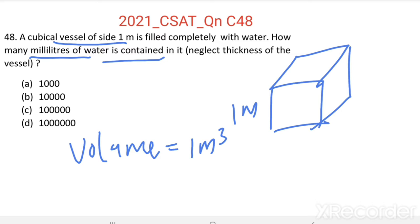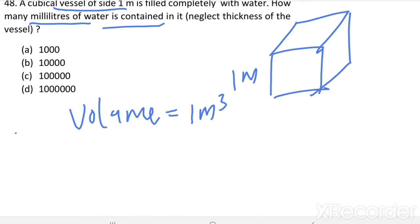We know 1 meter cube equal to 1000 liters, and 1 liter equal to 1000 milliliters.